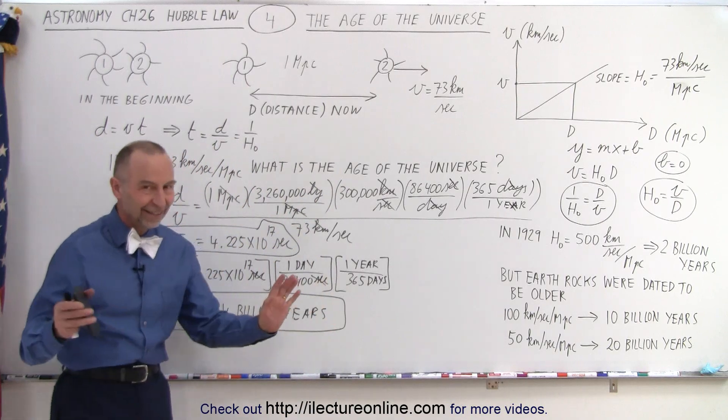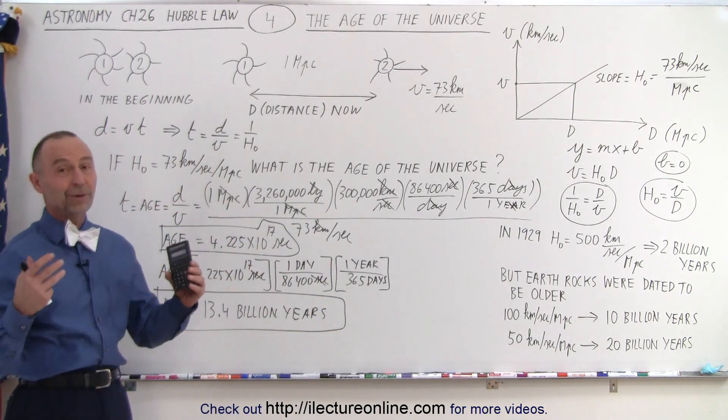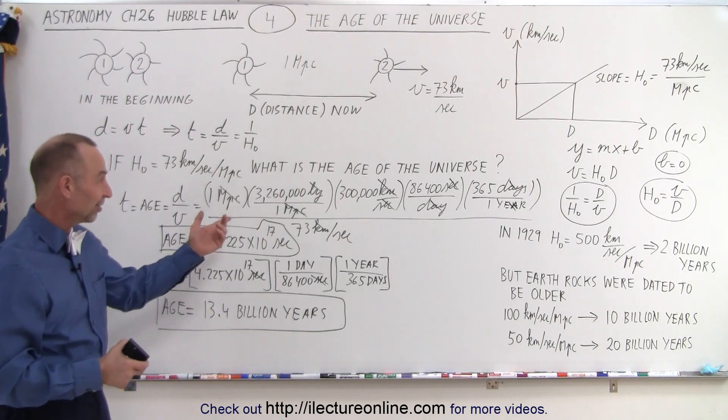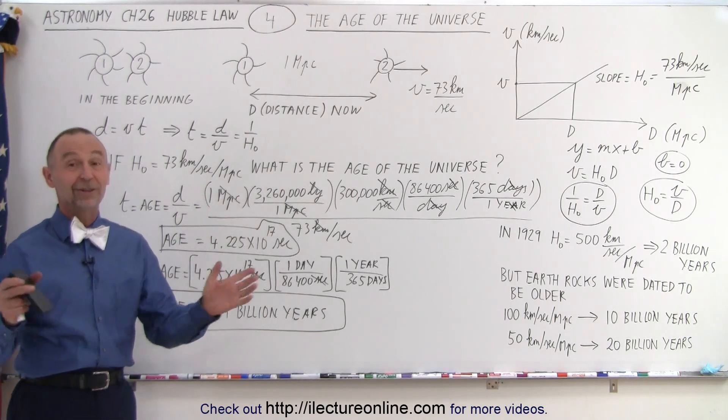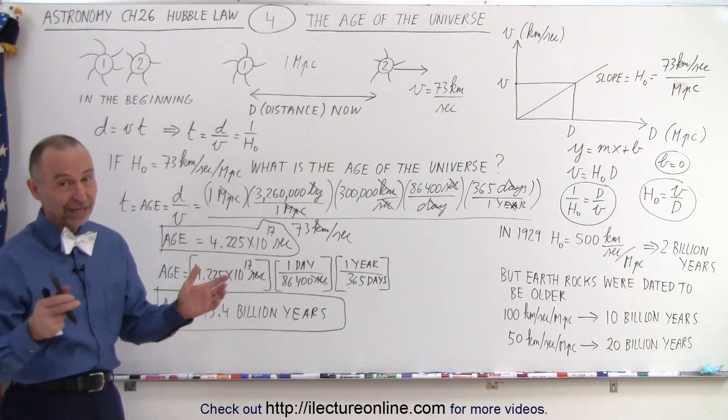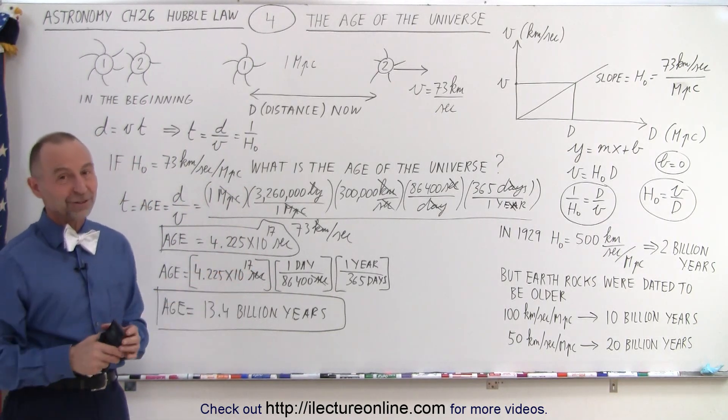But since then, we know that can't be true. There was actually a big war between the people believing globular clusters were 17 billion years old and the Hubble constant. According to Hubble, the Hubble telescope, not Edwin Hubble, but the Hubble telescope being about 12.8 billion years old. So things have changed over time.